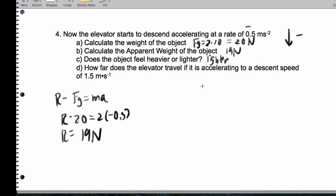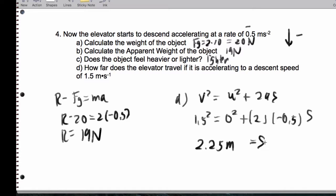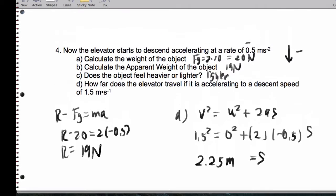How far does the elevator travel if it is accelerating to a descent speed of 1.5 meters per second? For part D, we'll say V squared is U squared plus 2AS. 1.5 squared is 0 squared plus 2 times negative 0.5 times S. And if we want to be clear here, we can say that S is also negative since it's descending. I'm just going to use absolute values here in a problem like this. We're going to end up getting about 2.25 meters for S. And that's number 4.